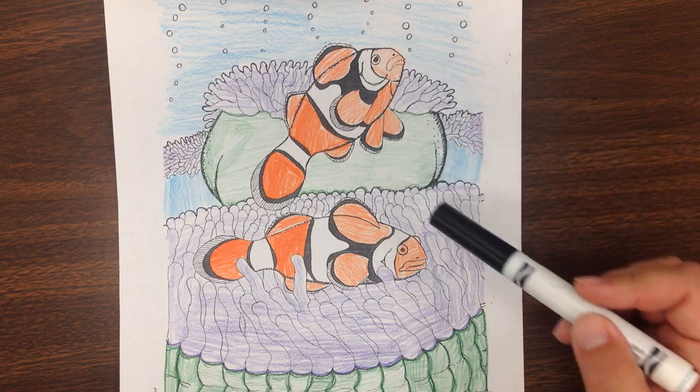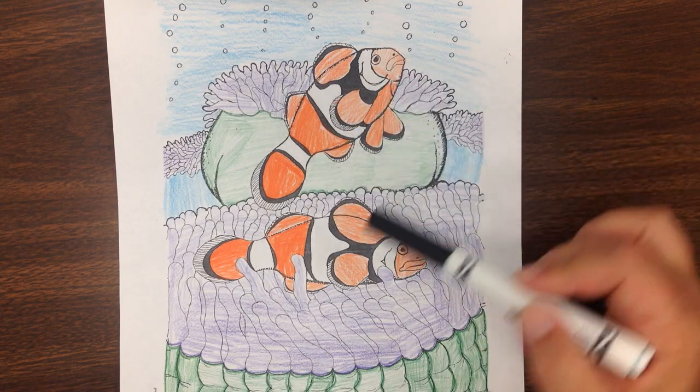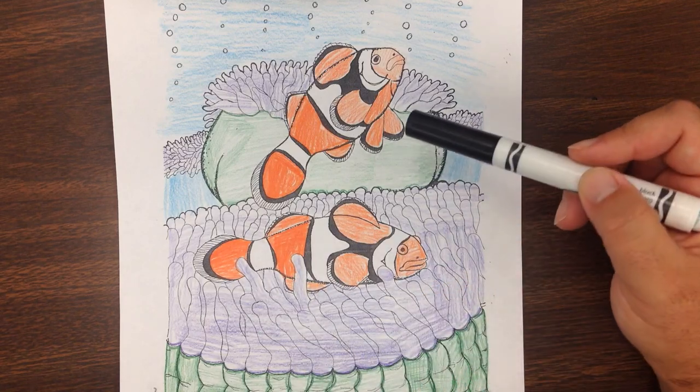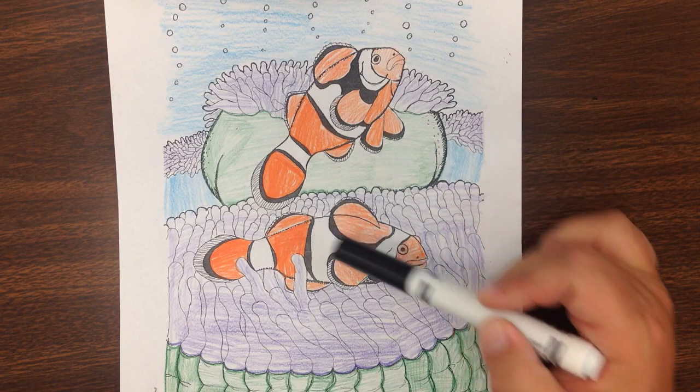You'll notice that a lot of the shapes are kind of round and curved. The fins all have very round edges including the tail and the pattern is also basically a series of curved lines.